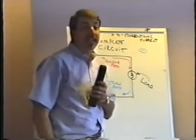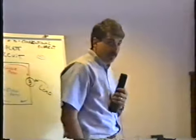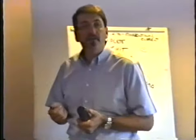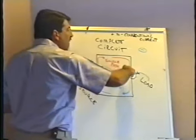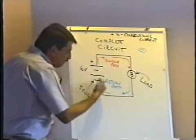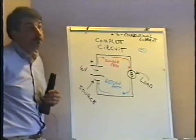Throughout this class, when discussing electric current flow and schematic diagrams, we'll be talking in terms of conventional current — the concept that electricity flows from positive to negative. It really flows from negative to positive, but since all schematics are drawn that way, that's how we look at it. It also makes it easier — electric current flowing from positive to negative works the same way water does, flowing from higher altitude to lower altitude.